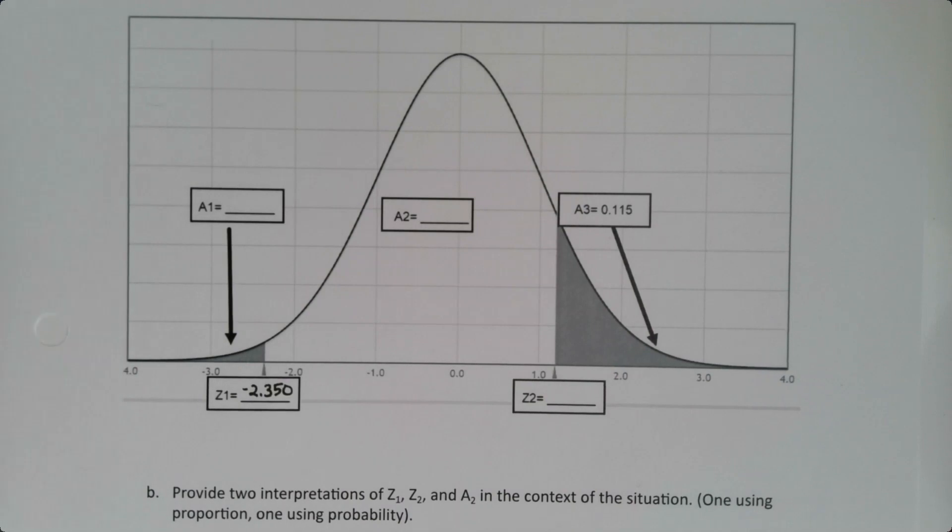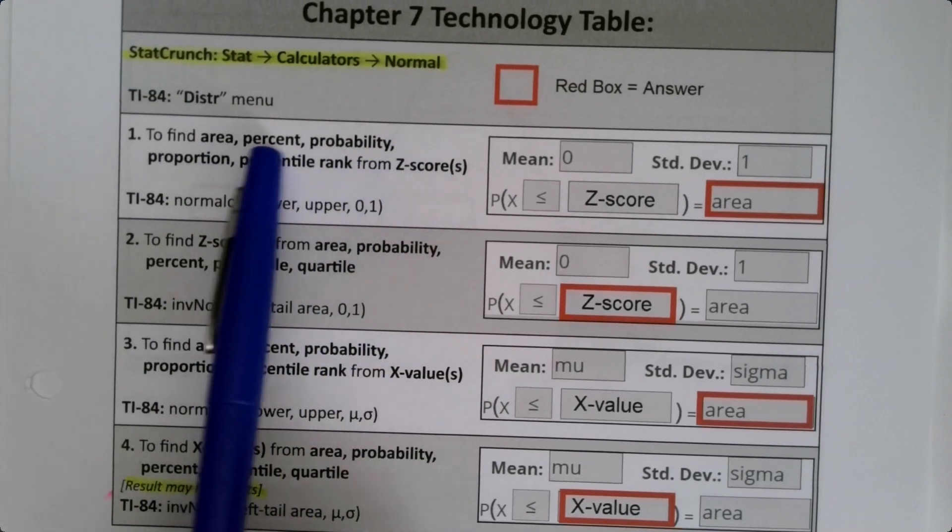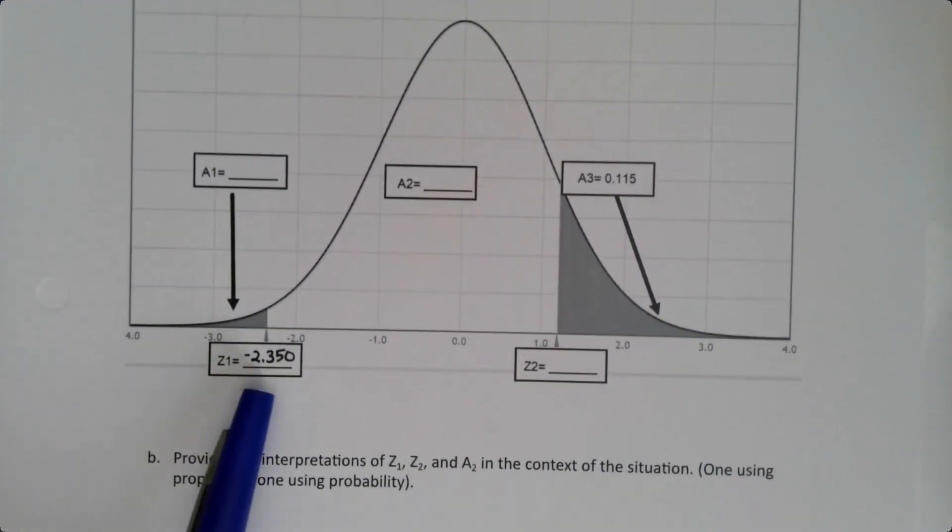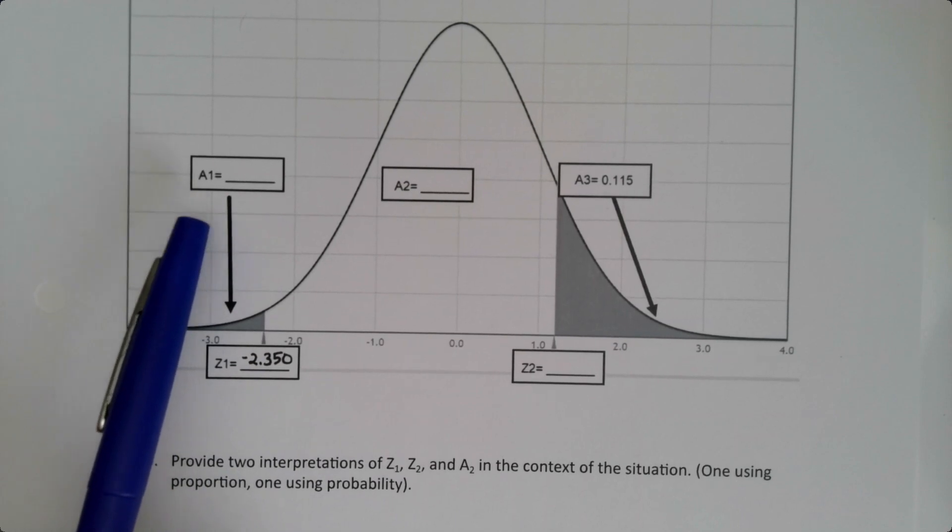Alright, so that means we have three things that we have to find, and it's a question of which one do you want to find first. And the answer is you can kind of go whichever way you want. I mean, you can't find the middle area yet. That would be the one that you have to wait on. But you could find this Z or you could find this area no problem. Alright, so let's go in the order that we learned them in. So the first thing we learned was how to find areas. So if I look over here, we want to find the area or percent or probability from a Z-score. We know a Z-score. The Z-score is known. It is negative 2.350. So therefore we could find this area.